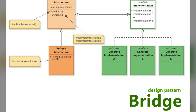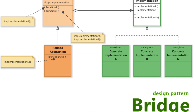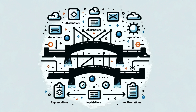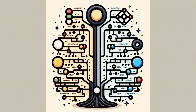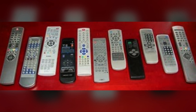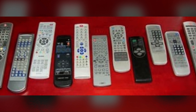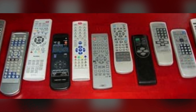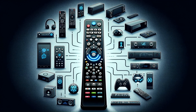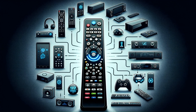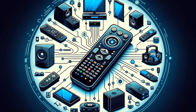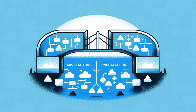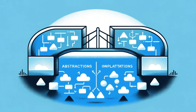The Bridge pattern separates an object's abstraction from its implementation so the two can vary independently. It's about preferring composition over inheritance. Consider having multiple remote controls for different devices — TV, radio, DVD box, DVD player. A Bridge pattern would be like having a universal remote control that allows you to control all available devices from one single remote.